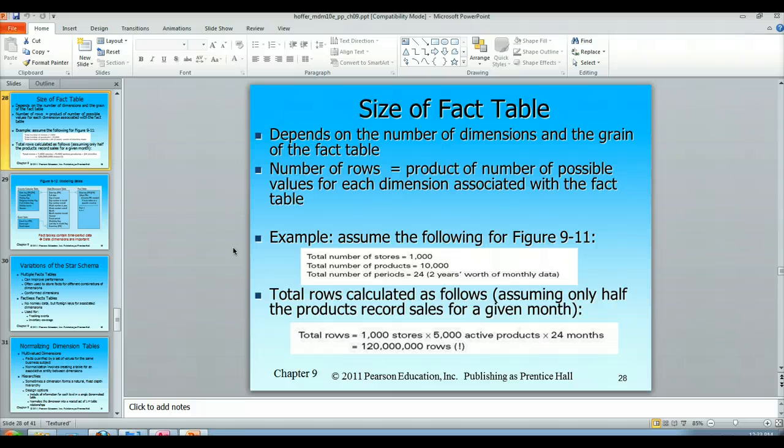So we want to calculate how many rows that's going to entail. Let's assume that we only put out half of our products during any given time period. Say we're in fashion, so we're going to have our winter and summer collections.